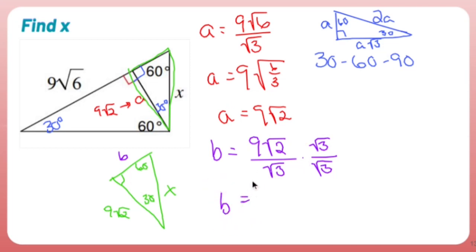B is going to equal 9 times the square root of 2 times the square root of 3, which is the square root of 6. When you're multiplying square roots, you multiply within the roots and make it one bigger root. The square root of 3 times the square root of 3 is the square root of 9. Square root of 9 is 3.